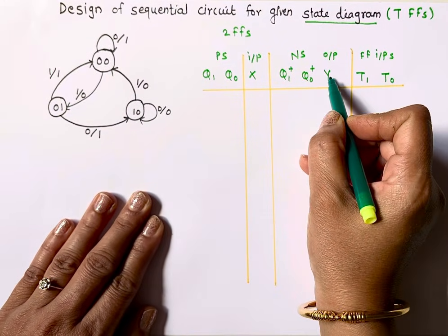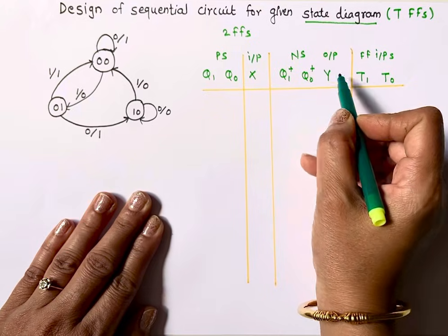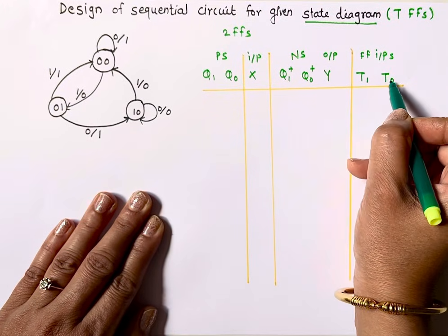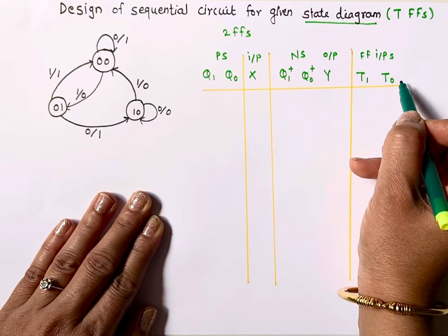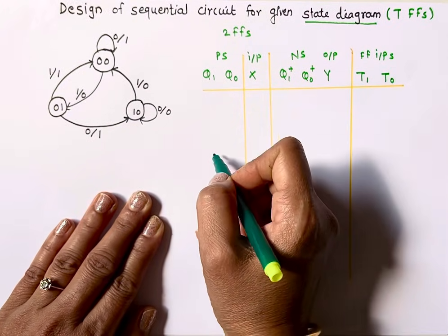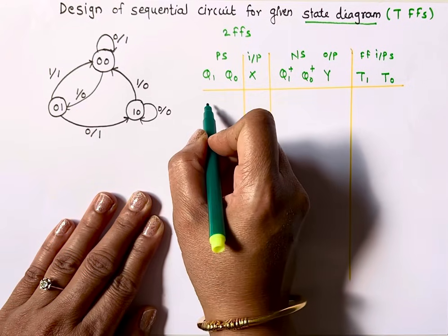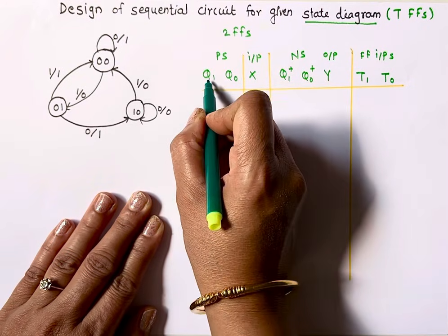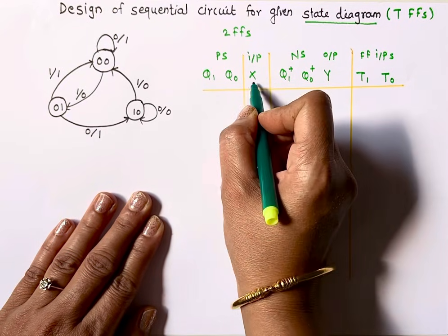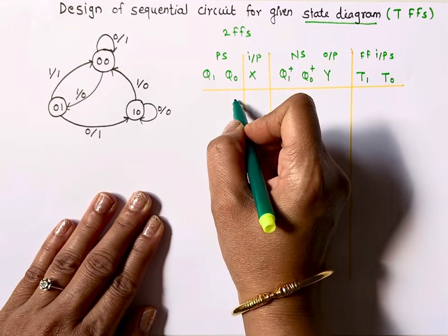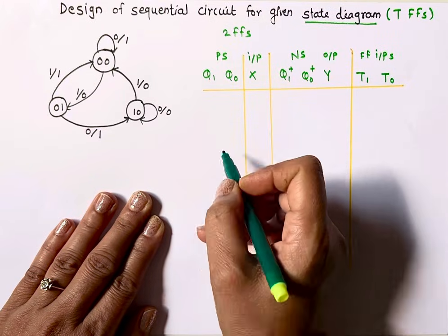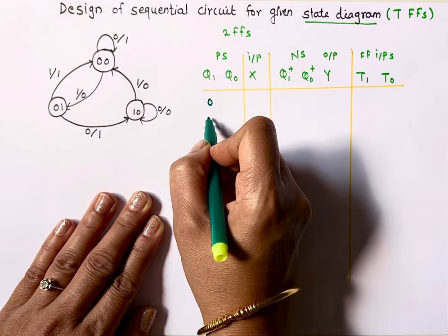These are the next states and this is my output Y. I'll take two flip-flops, so T1 and T0 are the inputs to those flip-flops. I'll complete the present states first — with three variables total, the Q1 column is 0,0,1,1 repeated and Q0 alternates 0,1,0,1, giving four rows for input X=0 and four for X=1.